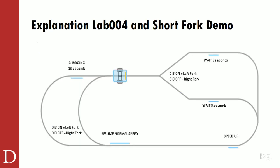A little bit of an explanation on Lab 4, and then I will do a fork demo. Our AGV is going to start here on a new map — you'll need to download it. As the AGV approaches this fork, it's going to ask: is digital input 3 on or off? If digital input 3 is on, I take the left fork. If it's off, I take the right fork. In either case, I'm going to approach a right marker strip where I'm going to wait for five seconds, then continue on.